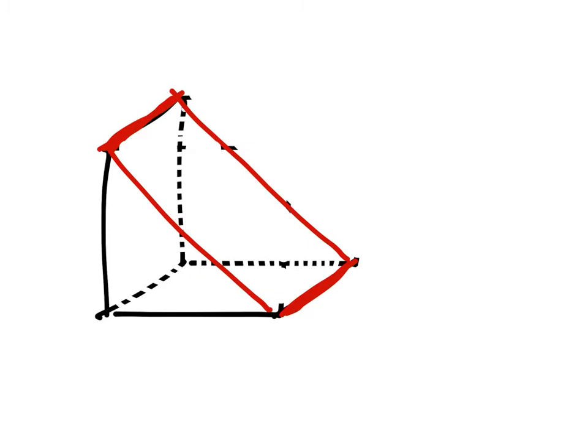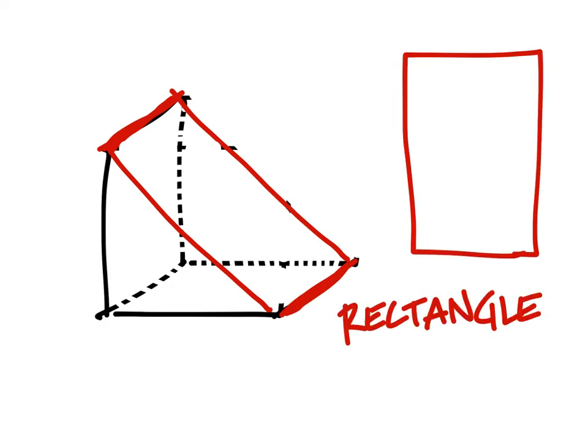Now what shape was created from the cross-section? Well, this one three-dimensional looks like a trapezoid kind of, but yes, this one is going to give us a rectangle. So that slice, that cross-section gave us a rectangle.